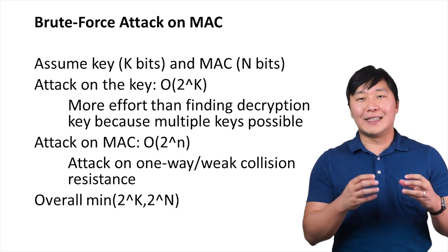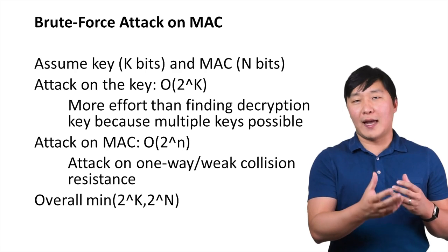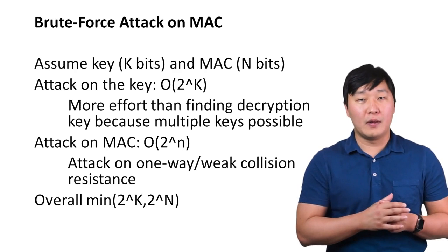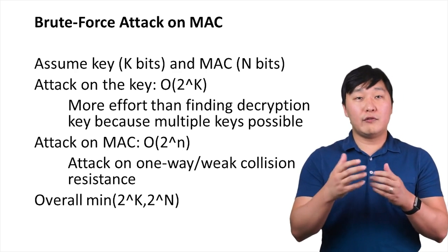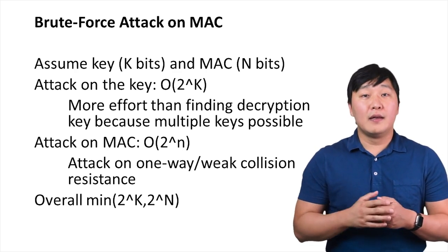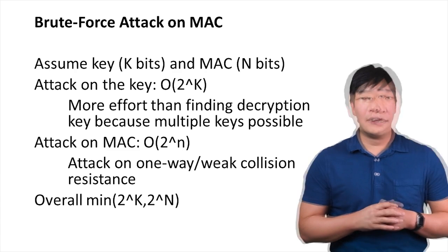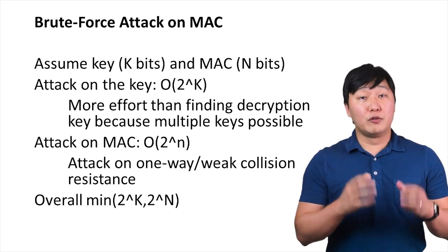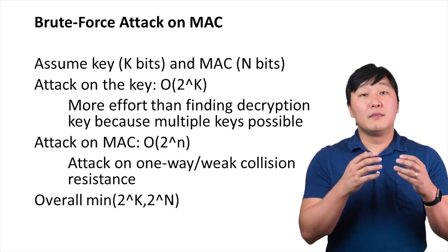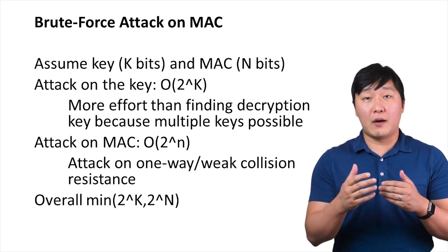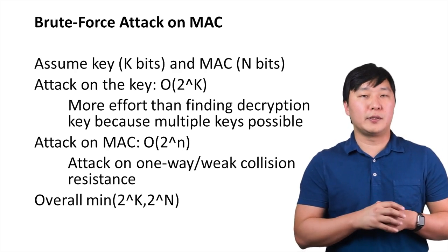The strength of a hash function against brute force attack depends solely on the length of the hash code produced by the algorithm, with a cost of O of 2 raised to the power of half of n by the birthday paradox and the attack on strong collision resistance. On the other hand, a brute force attack on a MAC has a cost related to the minimum of 2 to the kth power or 2 to the nth power, similar to symmetric encryption algorithms.